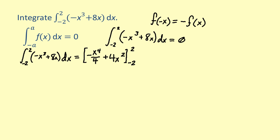Now let's evaluate. We get the quantity negative 2 to the fourth over 4 plus 4 times 2 squared, all minus the quantity of the negative of negative 2 to the fourth over 4 plus 4 times negative 2 squared.